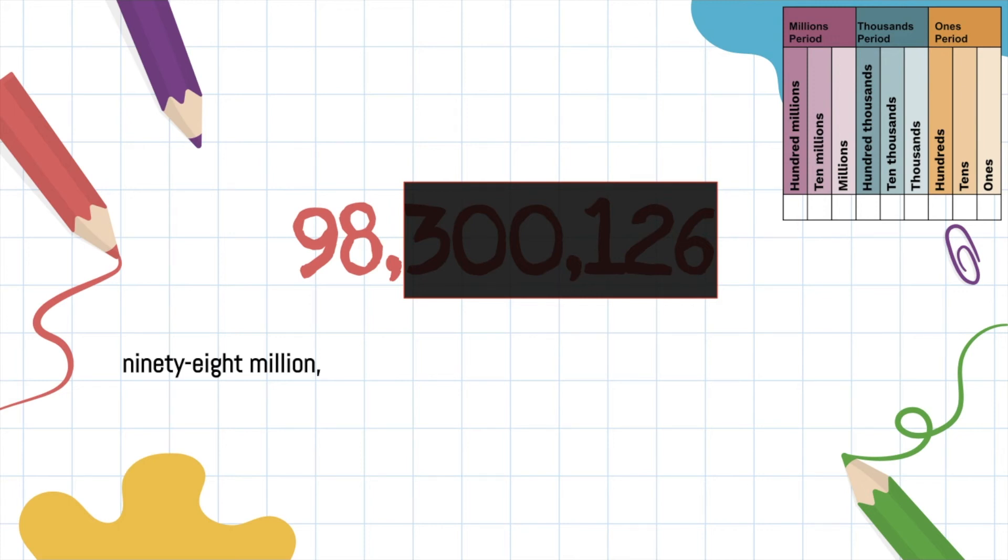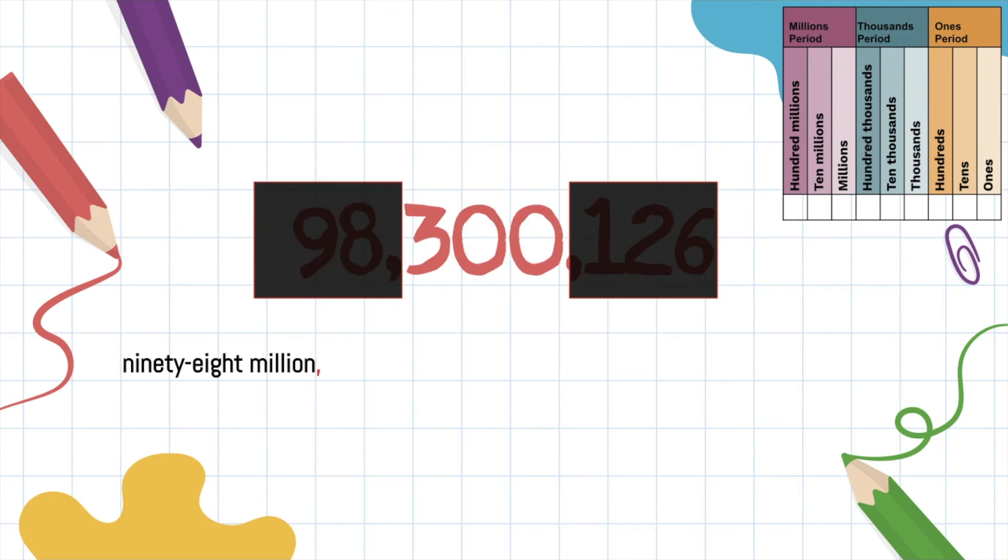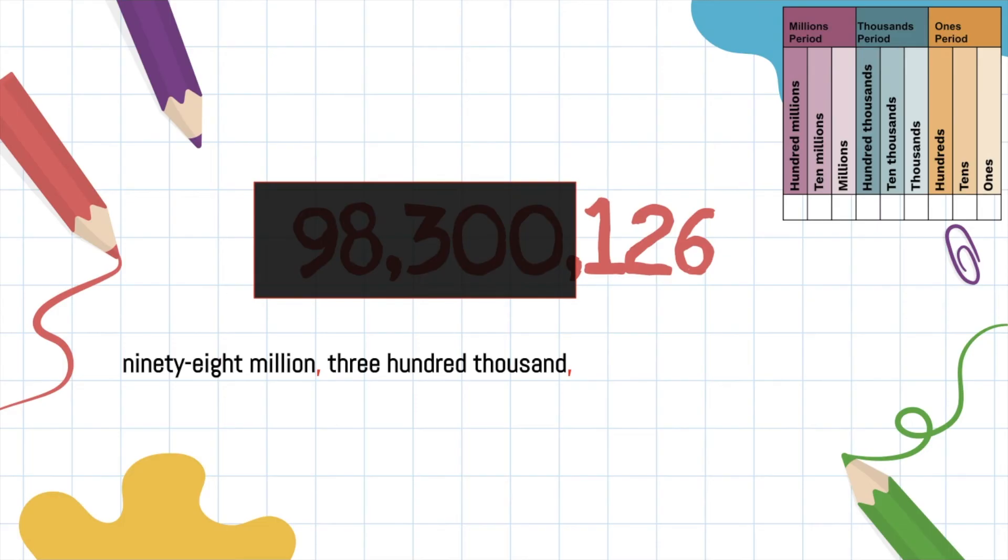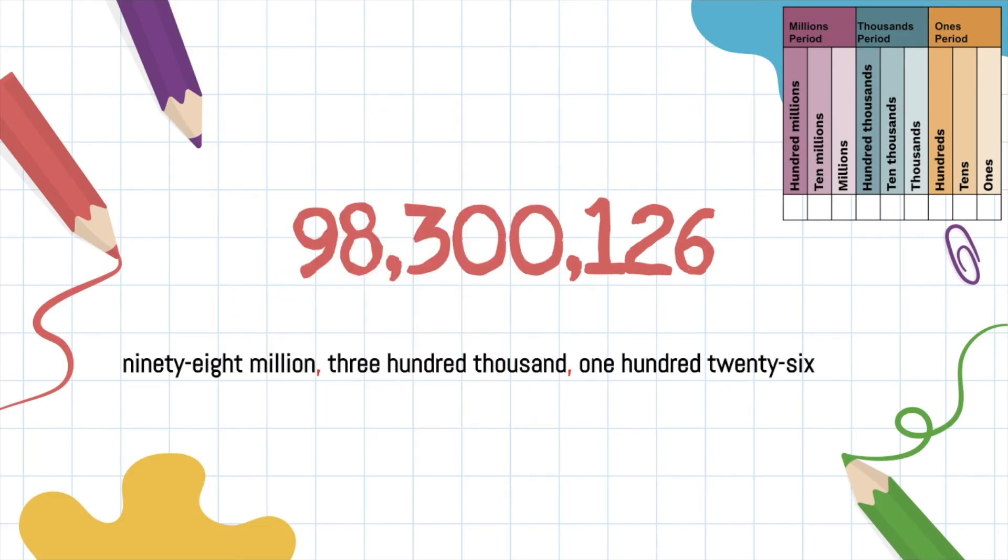So now let's cover up the millions period and show the thousand period. First name, 300. Last name, thousand. Don't forget the comma. First name, 126. Last name, psych! You don't get a last name. So the whole number, 98,300,126. Boom!